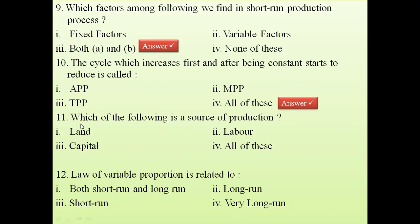Question 11: which of the following is a source of production? The four factors of production are land, labor, capital, and entrepreneur. Since land, labor, and capital are all in the options, the answer is all of these.